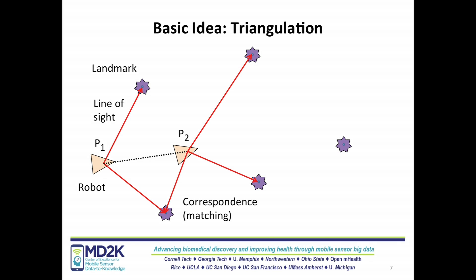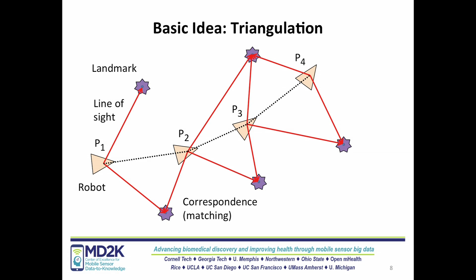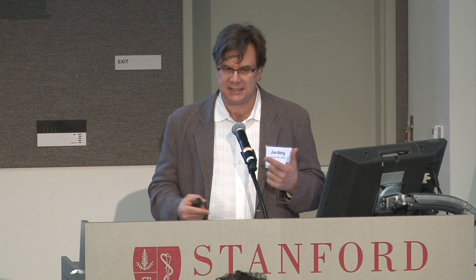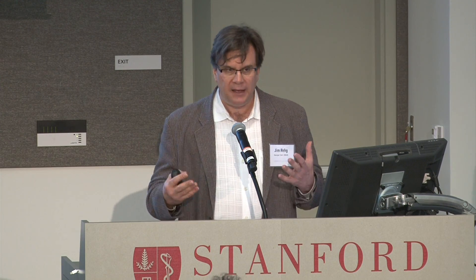You can see the structure of this: if we know the landmarks, we can figure out the robot's trajectory over time. And if we know the robot positions, we can triangulate and localize all the 3D points in the environment. There are a ton of algorithms for solving this coupled set of problems — fixing the robot, solving for the landmarks, and vice versa — iterating until it converges to a complete map and the robot's position over time. There's quite mature software now that can do this very reliably.